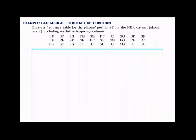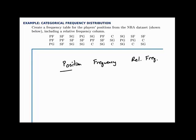In this example, we'll build a frequency table for categorical data. We're given a sample of NBA players with their position, which is a categorical variable — it divides them into categories: point guards, shooting guards, small forwards, power forwards, and centers. We'll build a frequency table with two columns — one for the position and one for the frequency — and then we'll add a third column for relative frequency. It's a good thing to include when you draw a frequency table. It's not entirely necessary every time, but it's a good idea to include it when you can.